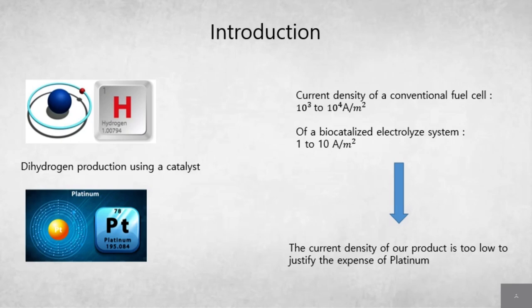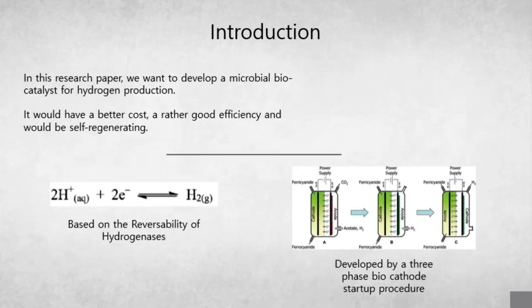The platinum current density is not high enough to justify the expense of platinum. Then, in this research paper, we want to develop a biofilm that will produce hydrogen. The whole article is based on one base, which is the reversibility of the hydrogenases. The fact that we can go from hydrogen to produce two H+ and two electrons, and the opposite direction, it's really important to be able to go in the opposite direction. The whole experiment is based on this.